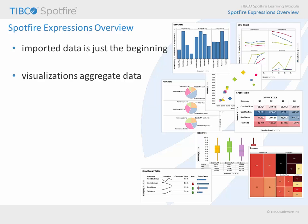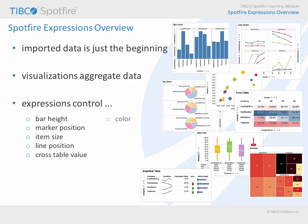In other words, an expression is used to aggregate data. These aggregate values may represent not only bar height, but also marker position, item size, line position, cross table value, color, pie sector size, icon rule threshold, shape, et cetera.